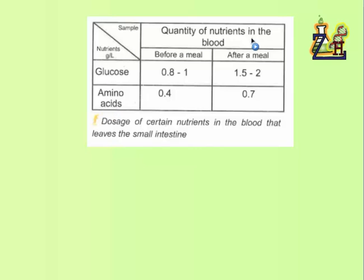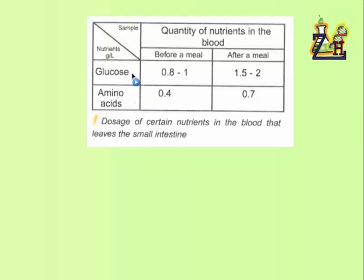In your book, activity 5, document F shows the quantity of nutrients — glucose and amino acids — in the blood before and after a meal. We notice that the amount of nutrients increases in the blood after we eat: the quantity of glucose in the blood increases and the quantity of amino acids increases. So where does this increase come from? Obviously it comes from the intestine — these nutrients, after complete digestion, do not stay in the intestine; they move into the blood, which is why their quantity in the blood increases.